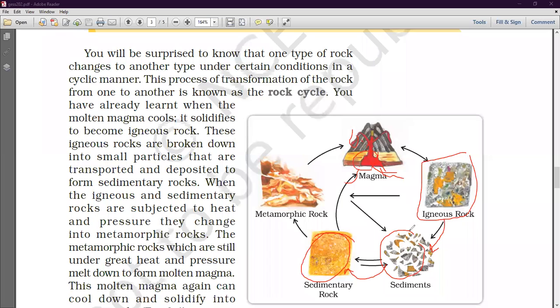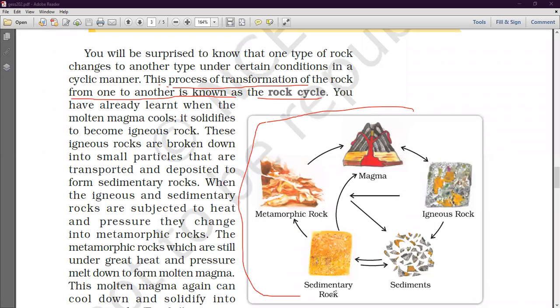Then from the igneous rock and sedimentary rock, when the heat and pressure became metamorphic. So in a cyclic manner, the process keeps going. So this process of transformation of rock from one to another is a rock cycle. So this is a whole rock cycle, which is converted into one to another. So that is called the rock cycle.